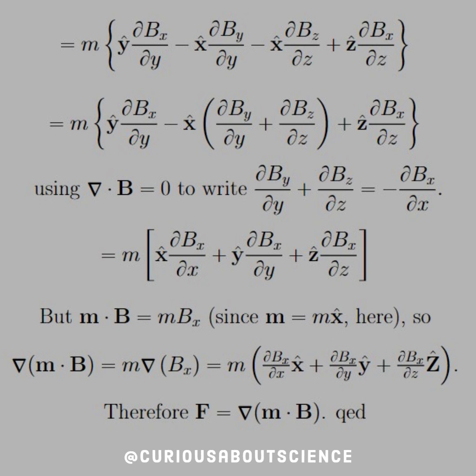So the gradient of m·B is equal to m∇Bx, which is exactly what's shown. And therefore when we reconstitute it, we see that F is equal to grad(m·B), and that is the final result.